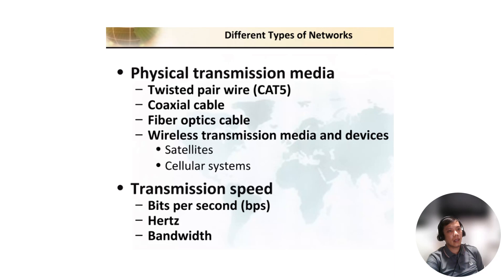Different types of networks — physical transmission media include: twisted pair wire, coaxial cable, and fiber optics cable. Wireless transmission media and devices include satellites and cellular systems. Transmission speed is measured in bits per second (bps), hertz, and bandwidth.